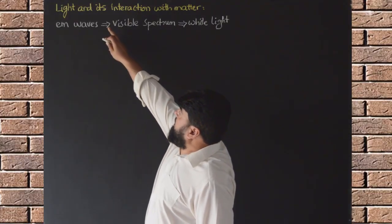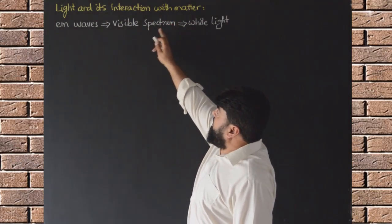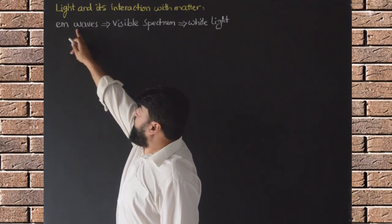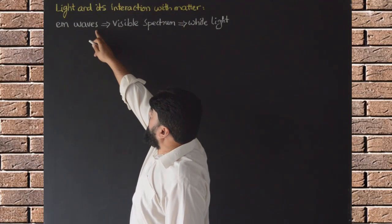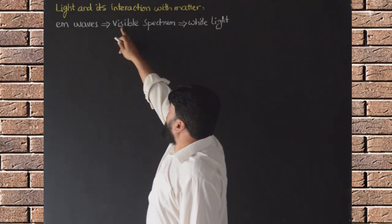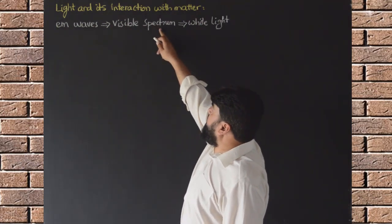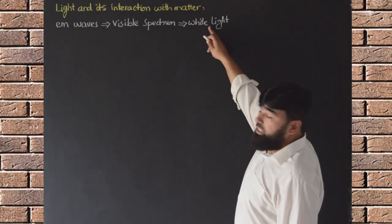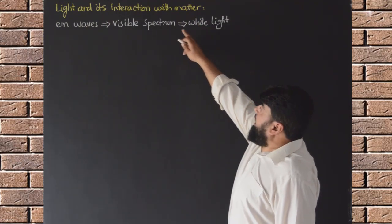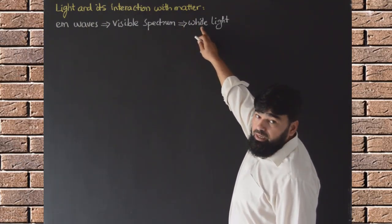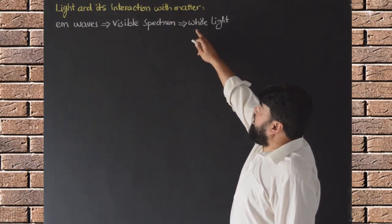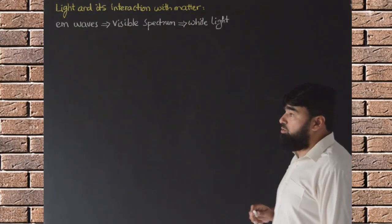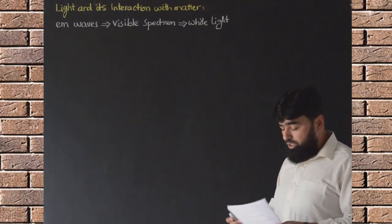In this lecture we will discuss light and its interaction with matter. Light is an electromagnetic wave and it has a large spectrum. We will only focus on the visible spectrum. Inside the visible spectrum we call it white light or colorless light, and it contains seven colors. Those seven colors are not visible unless and until this light interacts with matter, so we will focus on that interaction.